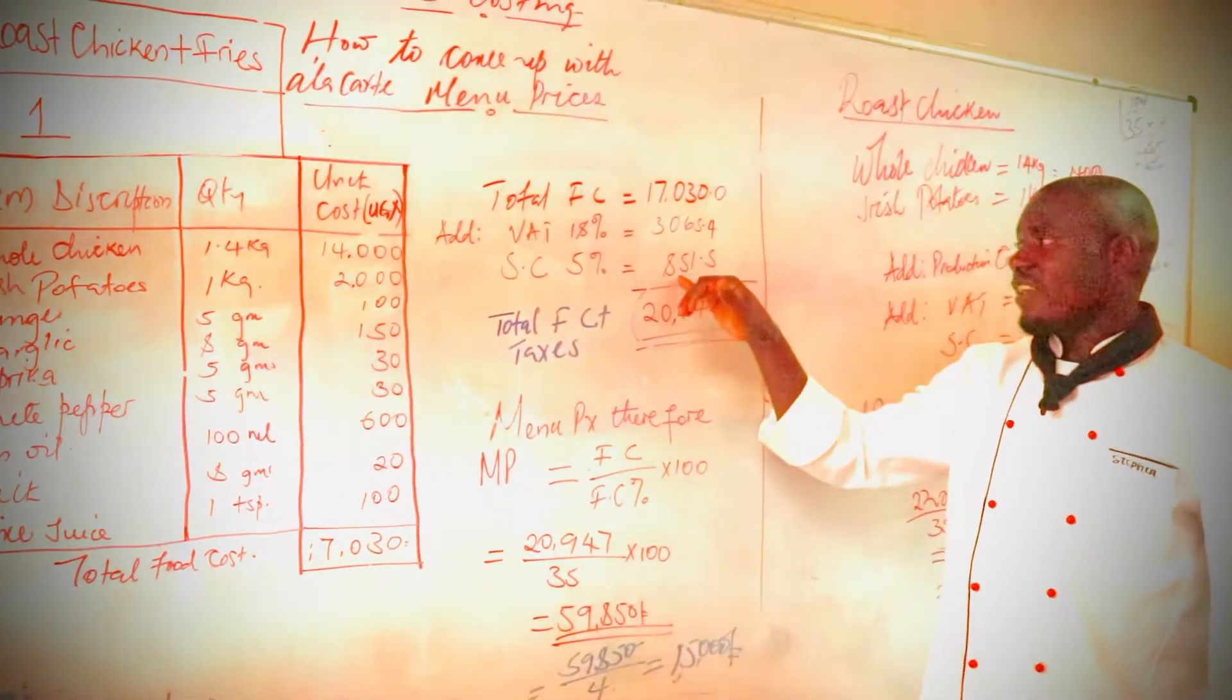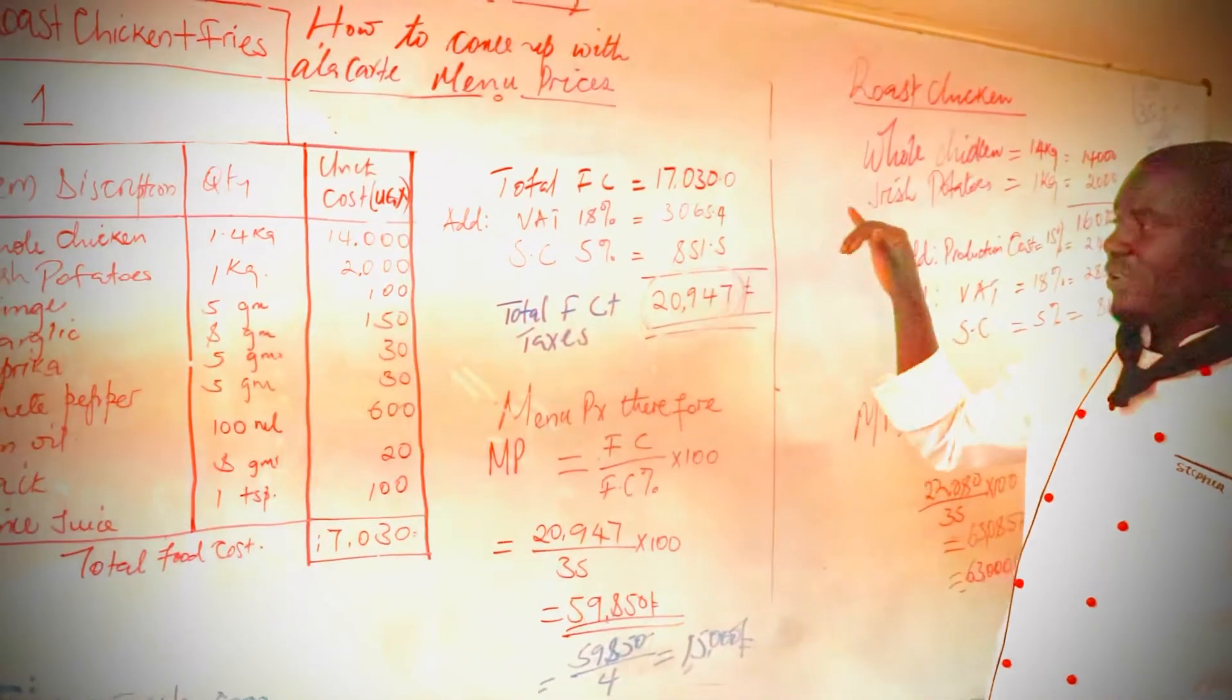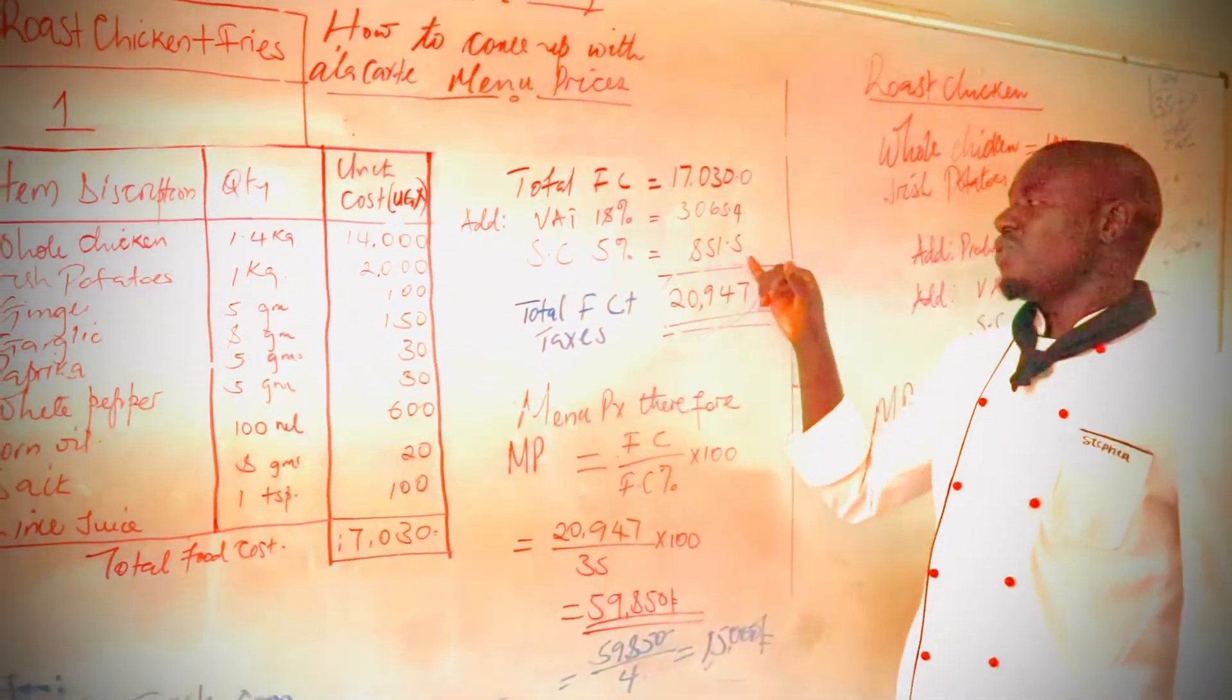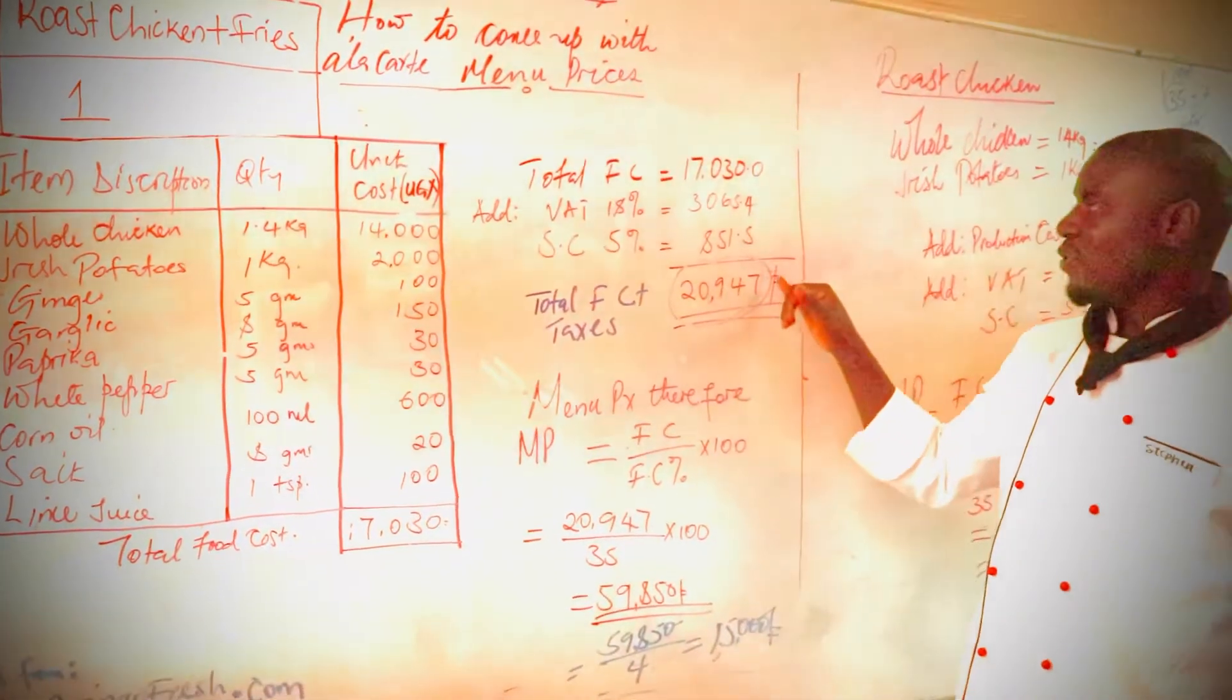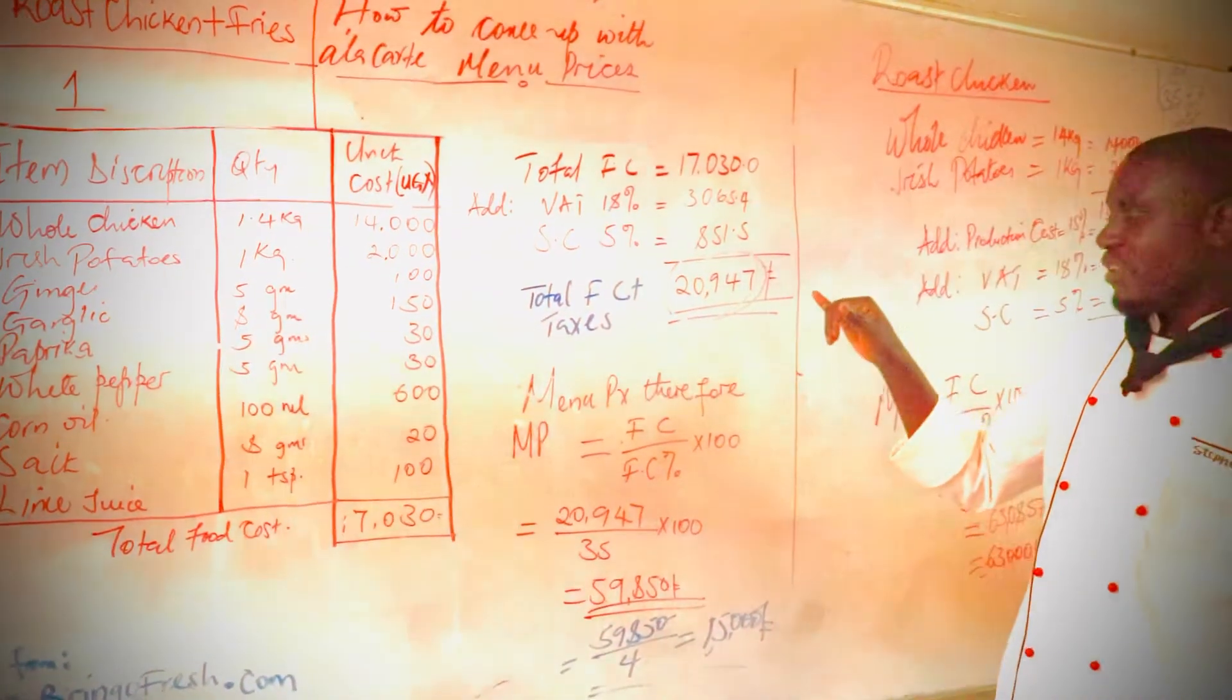That gives us 18,851 shillings, giving us a total food cost plus its taxes all of 20,947 shillings.